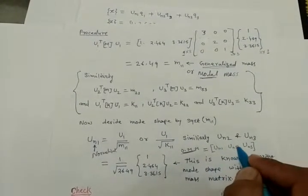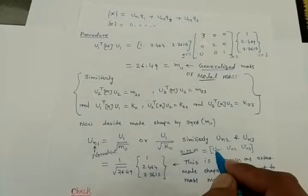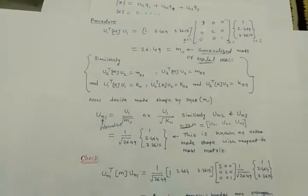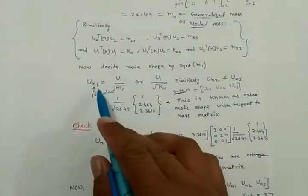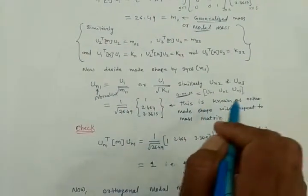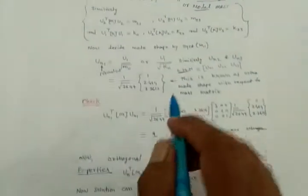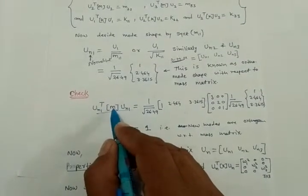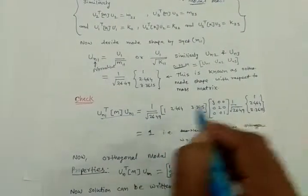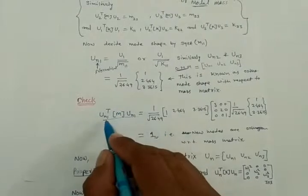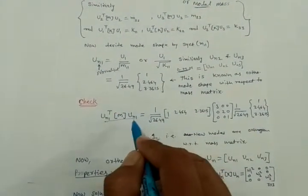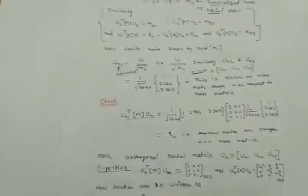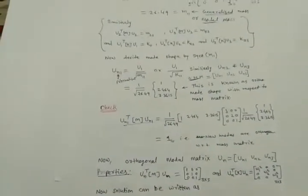If I am claiming these vectors are orthogonal, I must verify it. These vectors are orthogonal with respect to the mass matrix because we divided by sqrt(M11). So I check by computing un1 transpose times M times un1. Calculating this will surely give one, confirming that un1 is orthogonal to itself with respect to the mass matrix.